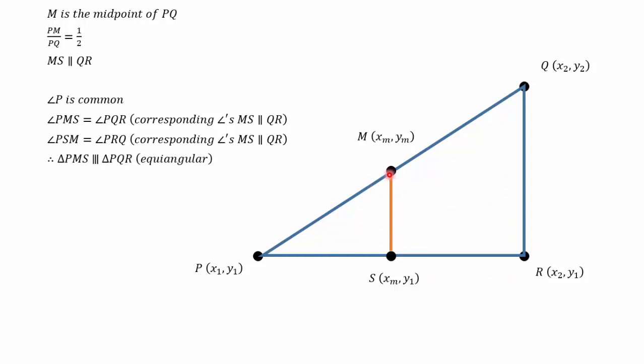That makes these two triangles, triangle PMS, this little triangle, and PQR, this big triangle, similar because the three angles are equal.